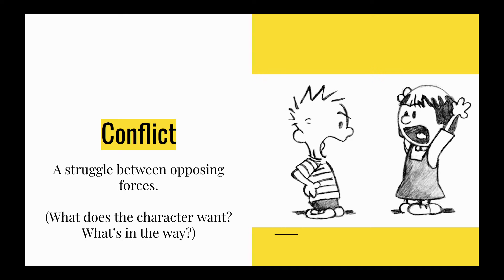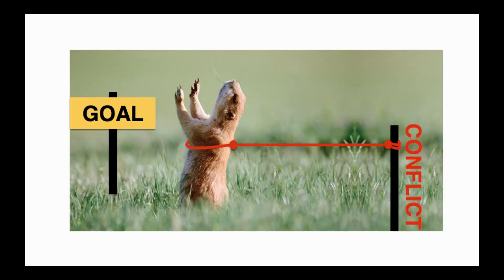Some way that I help remember it is with this image. There's clearly a goal that this little creature wants, but the conflict means there's something keeping them back from their goal.